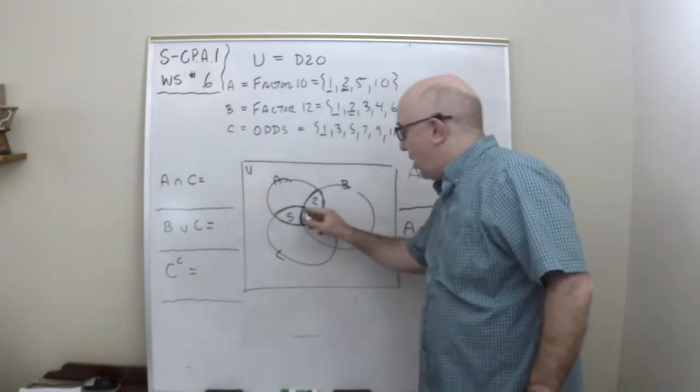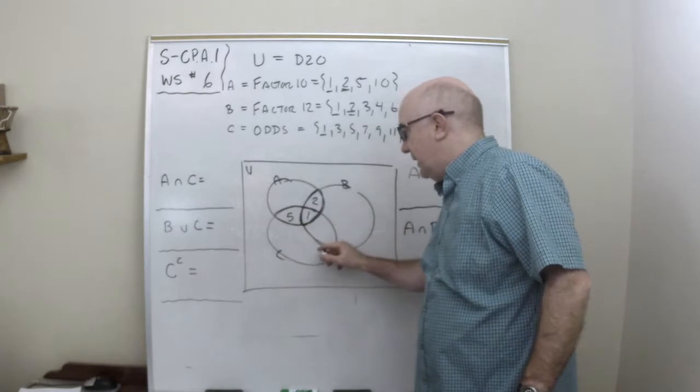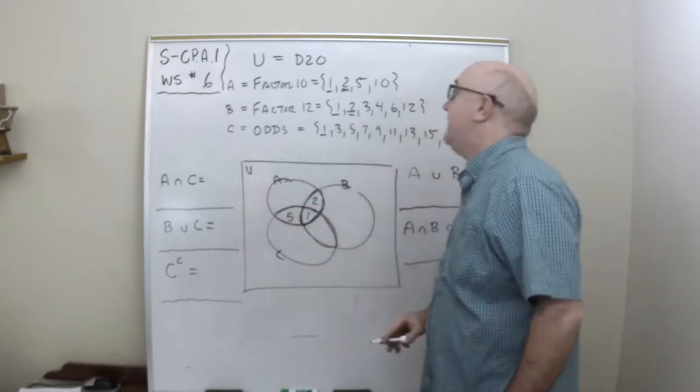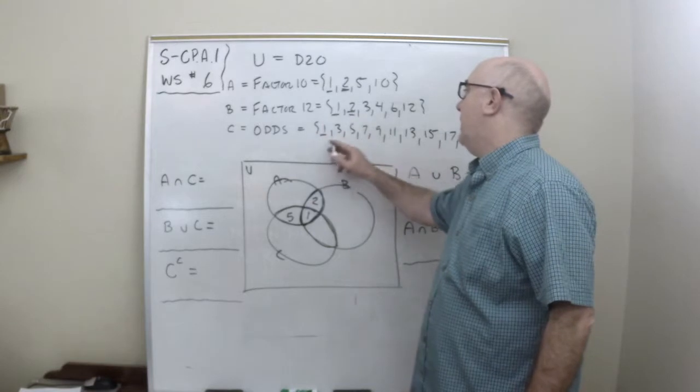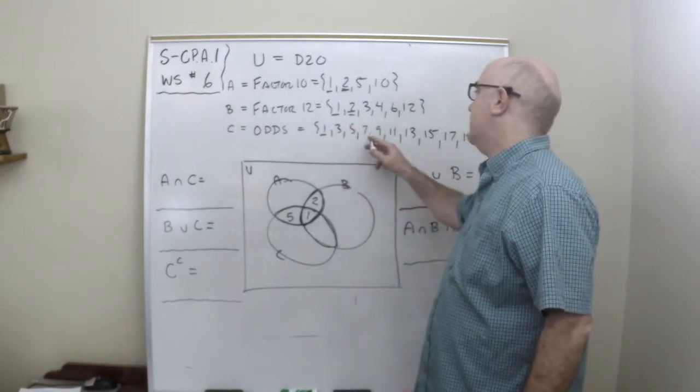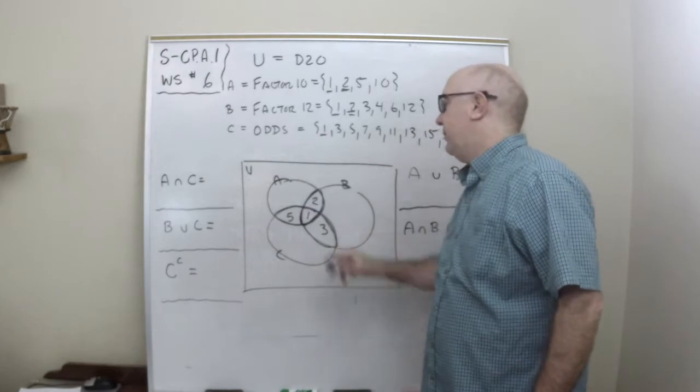Now what's in common between B and C will sit in this region B and C. The 1, the 3, and that's it. The 1 and the 3.